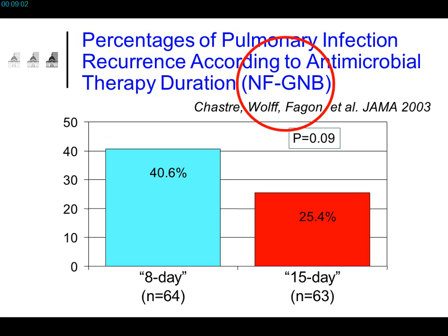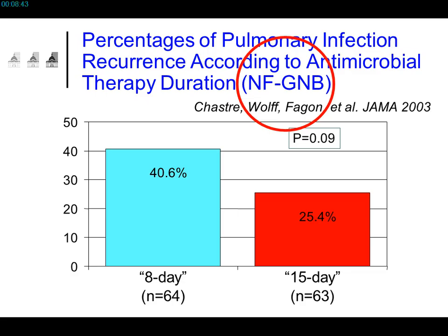Although not statistically significant, the percentage of relapse and recurrence of infection was higher in the group treated over only one week, though there was no higher morbidity. Safety margins need to take into account the type of infection and the responsible germ.